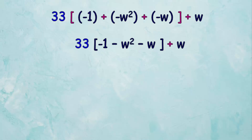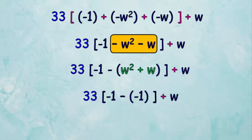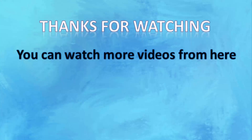We take negative 1 as a common factor from the second and third terms. By substituting the shaded expression with negative 1, we get 33 multiplied by: negative 1 plus 1, plus omega. This equals 0 plus omega, which equals omega.